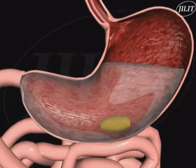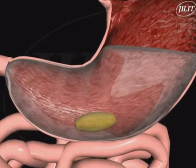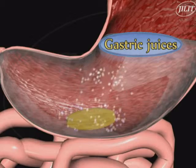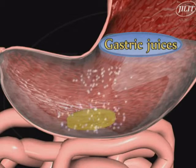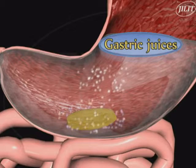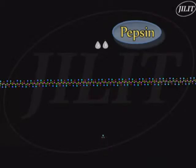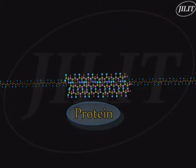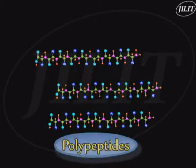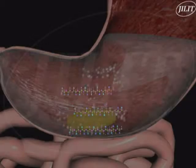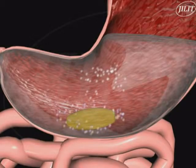Gastric glands present in the epithelial lining of the stomach secrete gastric juices, which consist of mucus, hydrochloric acid, and the enzymes pepsin and renin. Pepsin starts the hydrolysis of large protein molecules into smaller chains of polypeptides, by breaking specific peptide bonds.